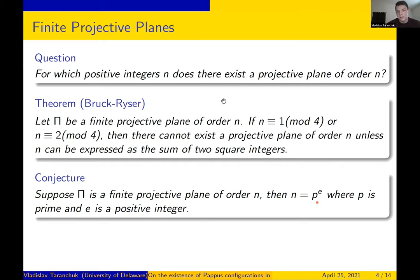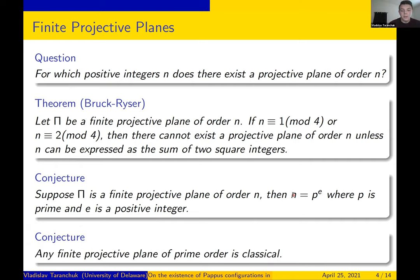The conjecture, which we're very far from answering, is that projective planes only exist for orders of prime power. Finite fields exist of every prime power order, so you can construct a projective plane of every possible prime power order. We have plenty of constructions of prime power order planes that are not isomorphic to the classical ones. However, there do not exist any known non-prime power order constructions. Another big conjecture is that every finite projective plane of prime order is in fact classical.